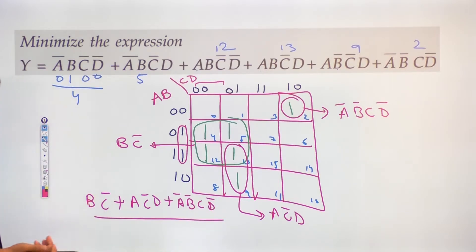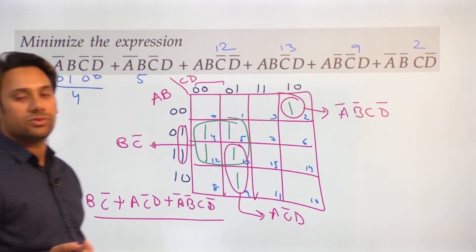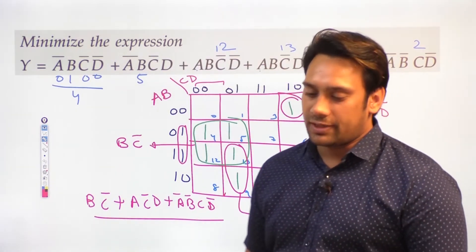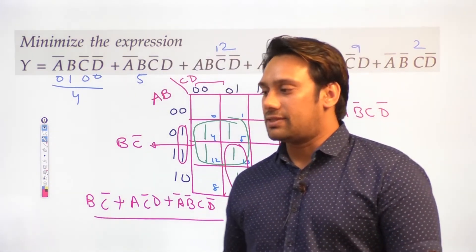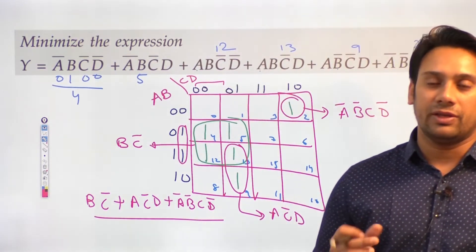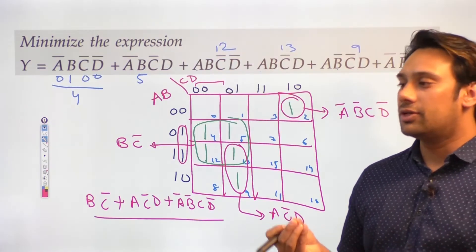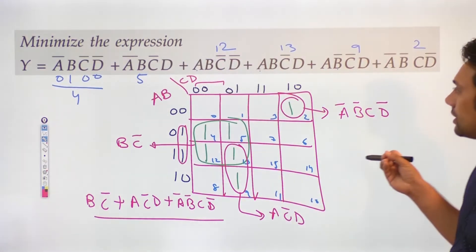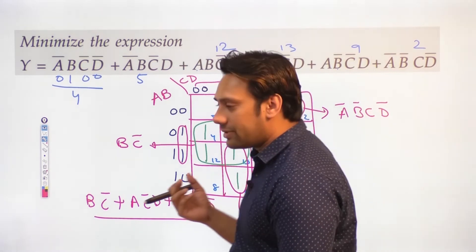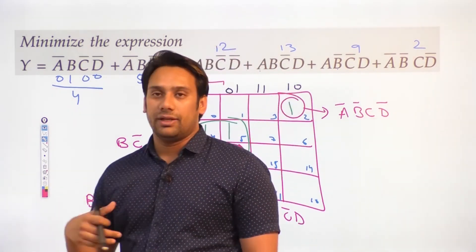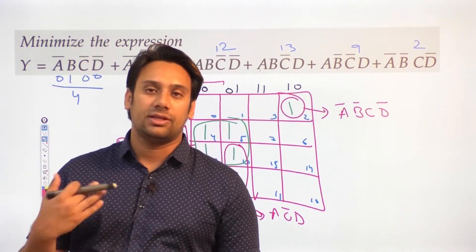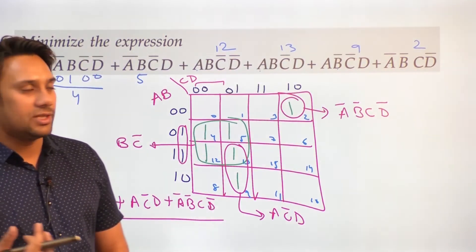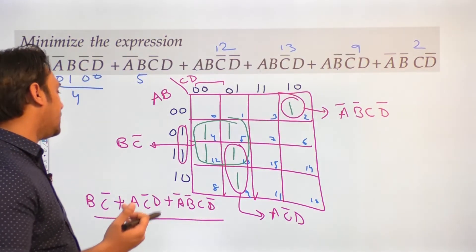You can clearly see how easy it was to solve this expression — it hardly took me one or two minutes. If I solve the same expression using the laws of Boolean algebra, it might take a lot of time, plus there are chances of mistakes. Here, the chances of mistakes are very less.